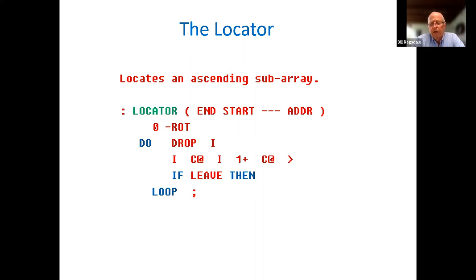I C@ FETCH, I 1+ C@ FETCH, greater than, checks for a declining value. If there is a declining value, it leaves the loop. Otherwise, the loop continues stepping across looking for a declining value. Notice that the address we get is the ending value of the qualifying substring. Because we know the starting value already, we need the ending value to give us what its length is.